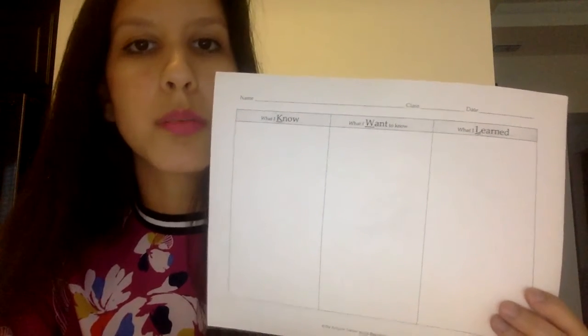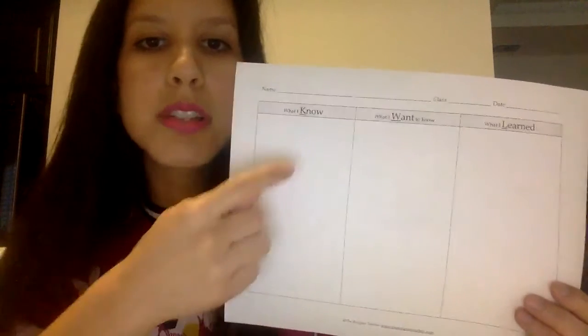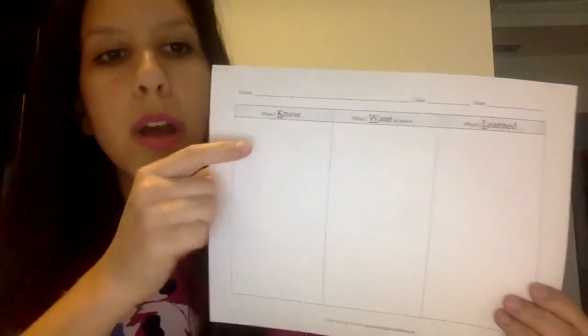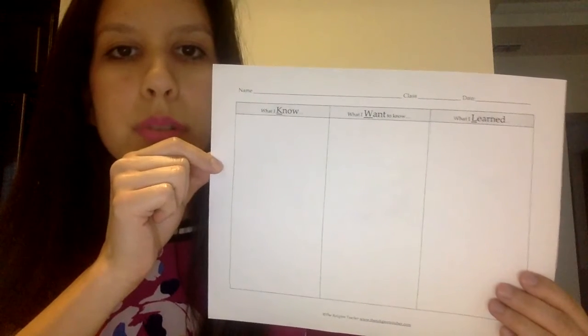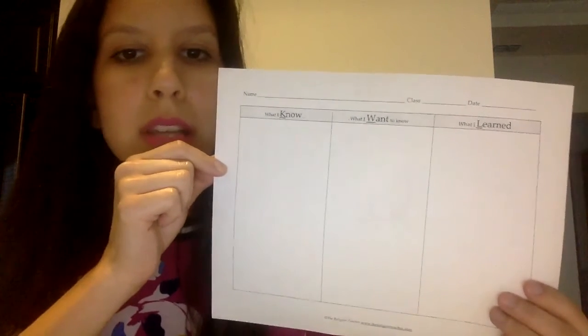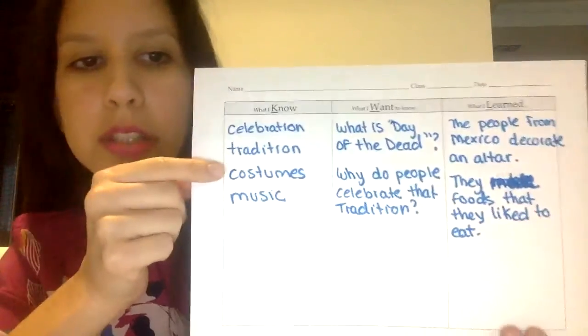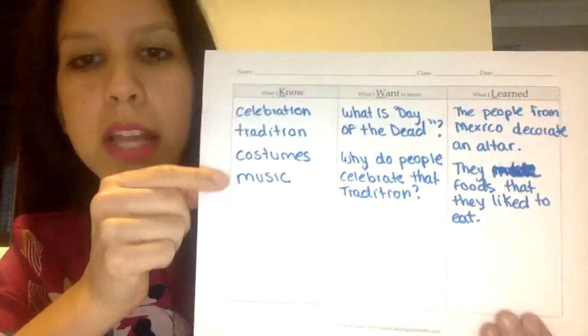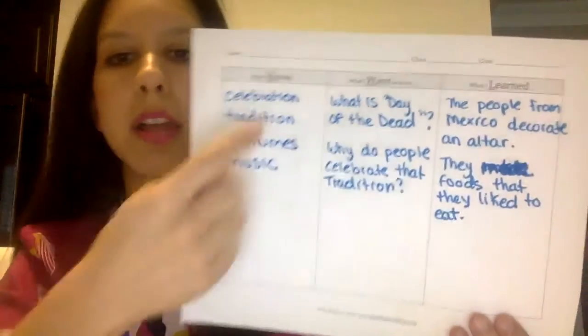The KWL chart will help your child comprehend the text better. On the first section of the chart, which is 'what I know,' your child will write what he or she thinks the story is going to be about, just by looking at the front cover of the book and reading the title. For example, your child might think the story is about celebration or tradition, costumes and music — you just write it on this section, under 'what I know.'